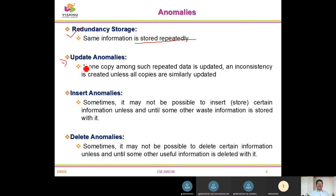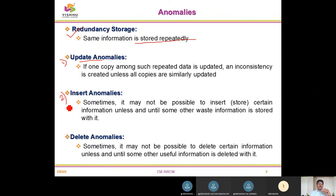After redundancy happens, the first type of anomaly to be covered is the update anomaly. If one copy among repeated data is updated, an inconsistency is created unless all copies are updated. If a database has a register number with four GPs, all those dependent values on that attribute have to be updated — that is the focus of the update anomaly.